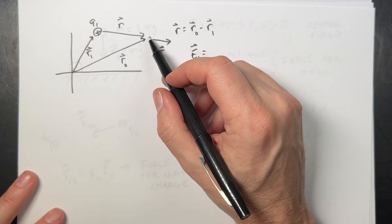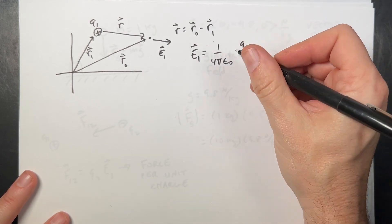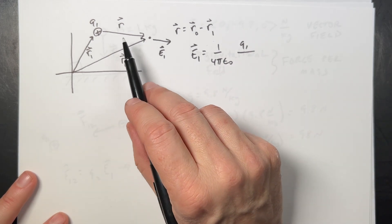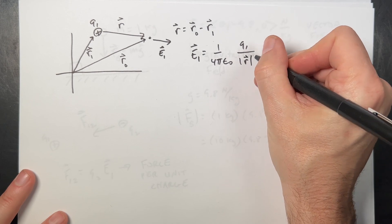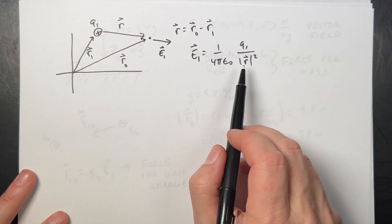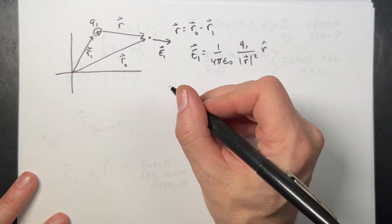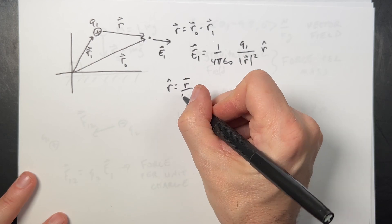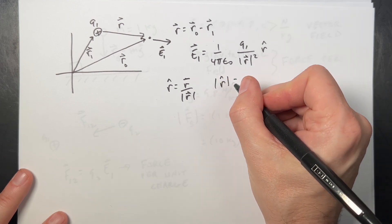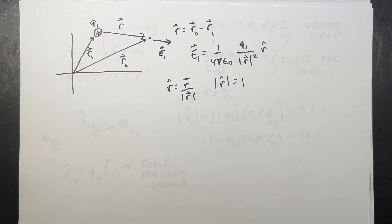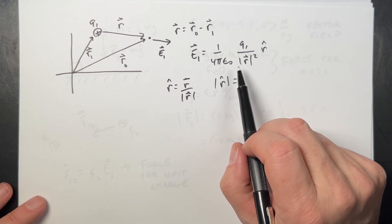The electric field E1 is like the force of a charge there divided by that charge, so: E1 = (1 / 4πε₀) × Q1 / |R|² × R̂, where R̂ is the unit vector in the direction of R, defined as R̂ = R / |R|. You can't divide by a vector, so you need the magnitude squared as a scalar, and then multiply by R̂ to get the direction. Without that unit vector you don't get a vector field, and we need it as a vector field.